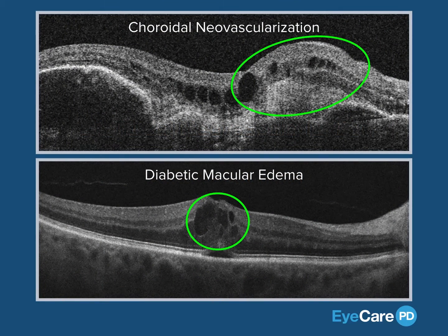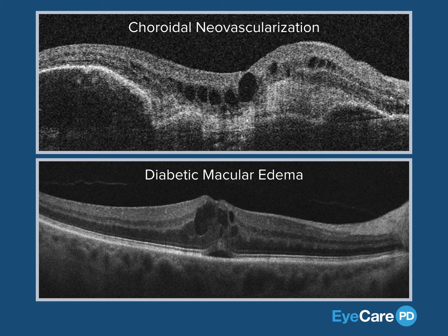Intra-retinal thickening, as detected by OCT imaging, can be seen in many different diseases. But choroidal vascular pathology will present differently than retinal vascular pathology. Recognizing the accompanying features and the way they are grouped will help you determine a diagnosis.